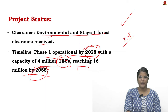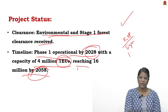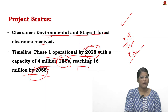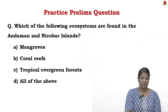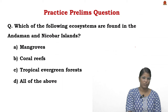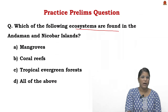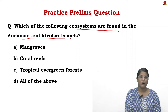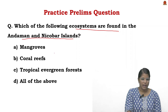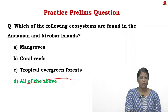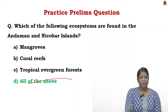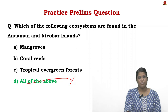So far we saw about ICTP — its significance and current status. Now let's solve a prelims question: which of the following ecosystems are found in the Andaman and Nicobar Islands? The correct answer is Option D: all of the above.